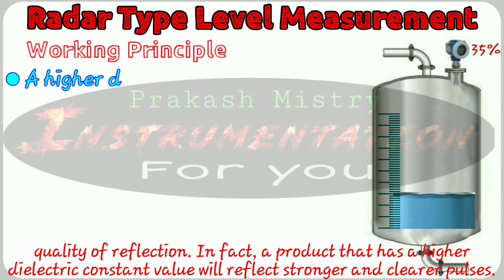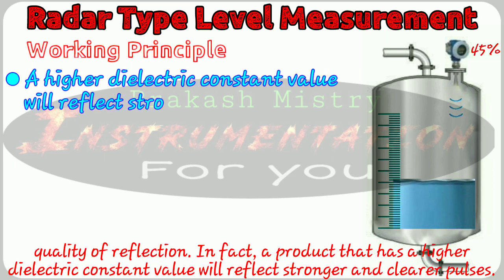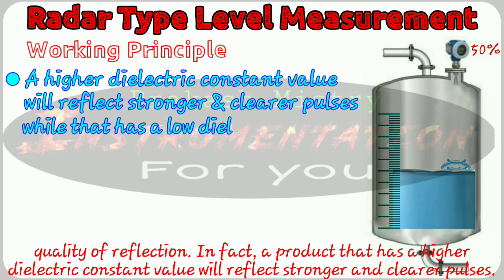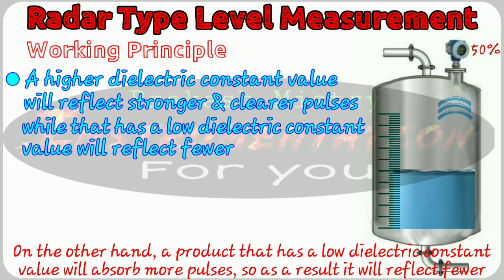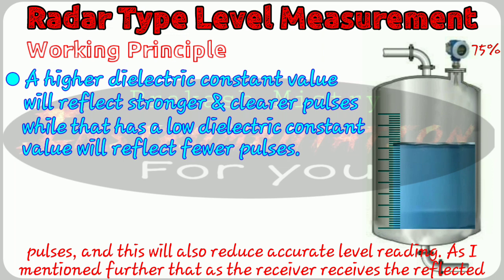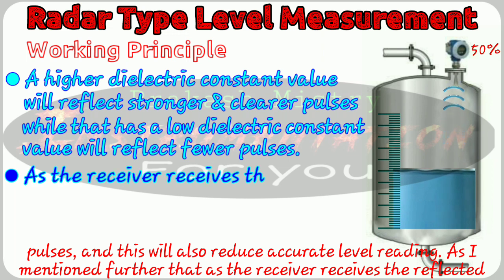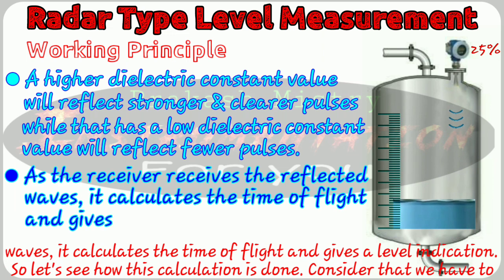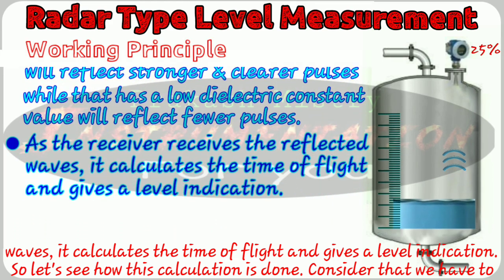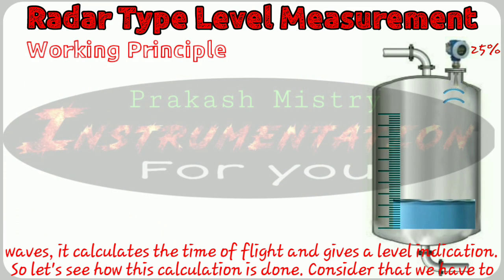A product that has a higher dielectric constant value will reflect stronger and clearer pulses. On the other hand, a product that has a low dielectric constant value will absorb more pulses. As a result, it will reflect fewer pulses and this will also reduce accurate level reading. As the receiver receives the reflected waves, it calculates the time of flight and gives the level indication.